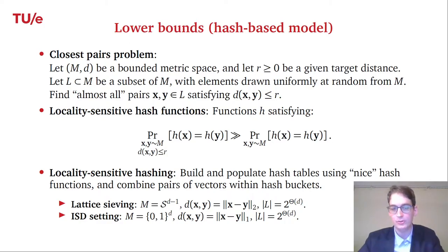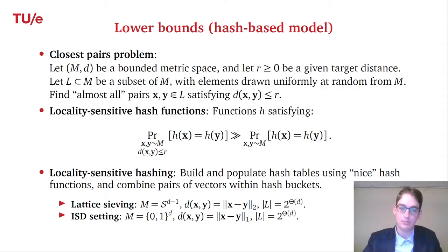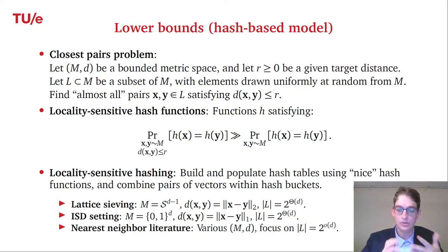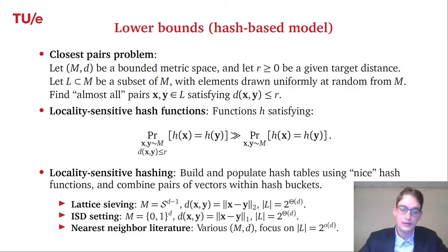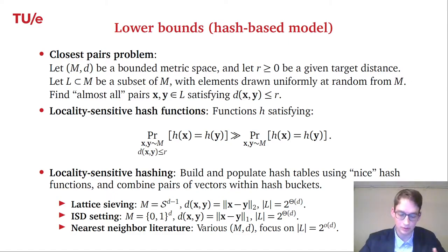For the information set decoding setting, the metric space is the Hamming cube with the Hamming (L1) distance, and again the list size is exponential in the dimension. Locality sensitive hashing has been studied outside cryptography for a long time, but in the nearest neighbor literature people commonly consider sub-exponential list sizes — so existing lower bounds in that literature do not apply to our setting with exponential list sizes.